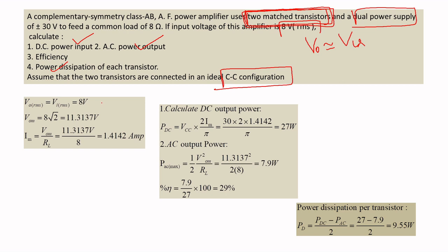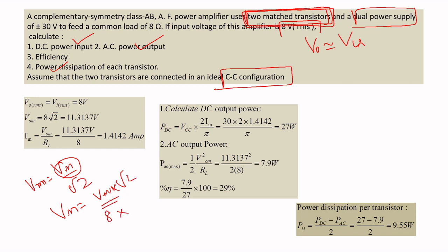If you know the formulas and understand the problem statement, you can solve this easily. Since Vrms = Vm / √2, the peak voltage is Vm = Vrms × √2 = 8 × √2 = 11.317 volts. The peak current is Im = Vm / RL = 1.4142 amps.